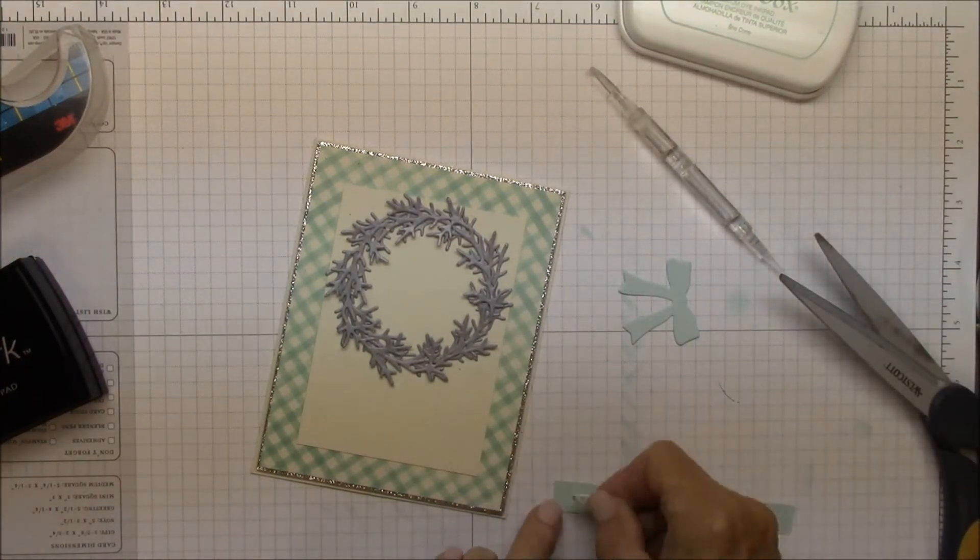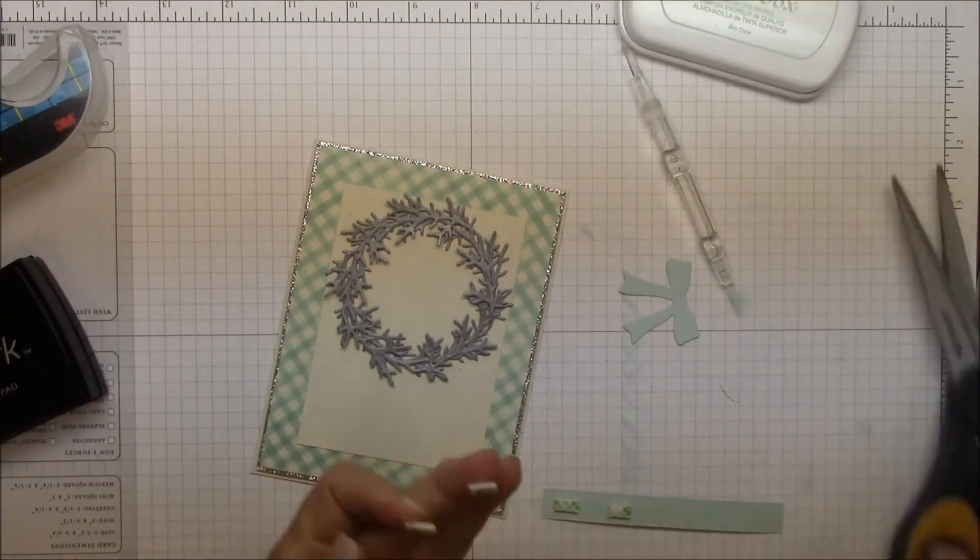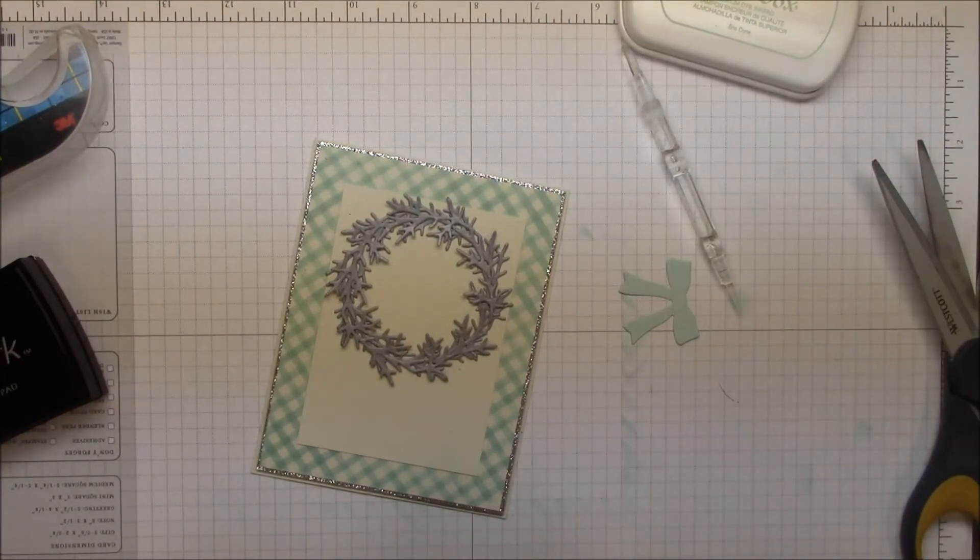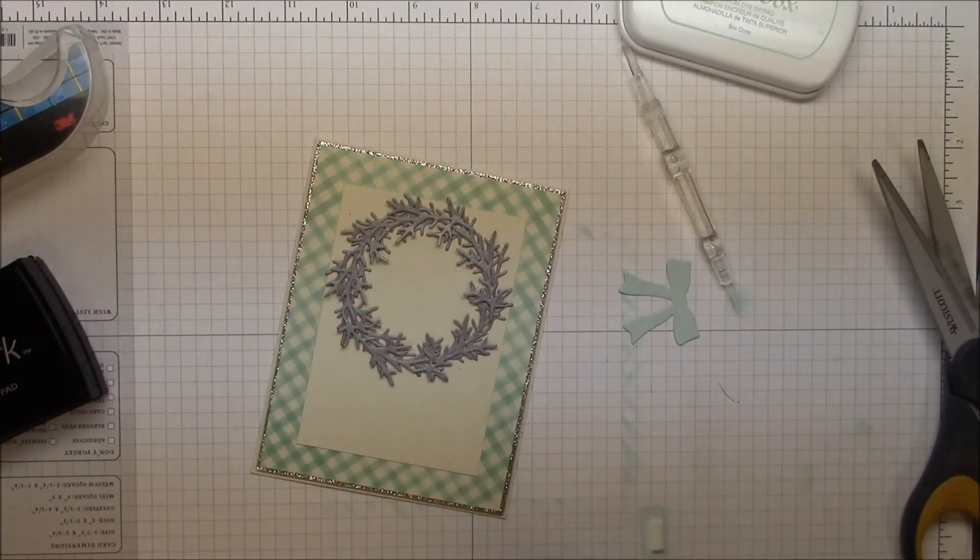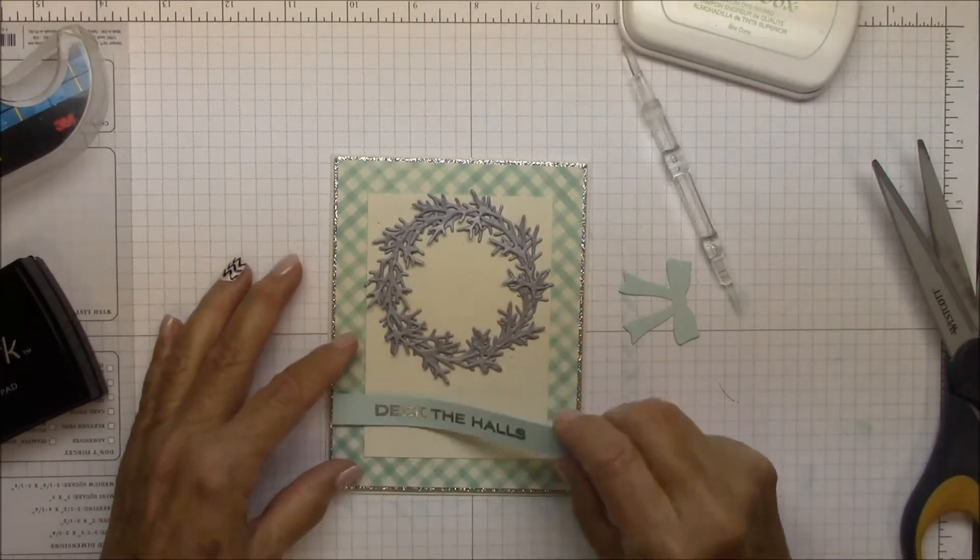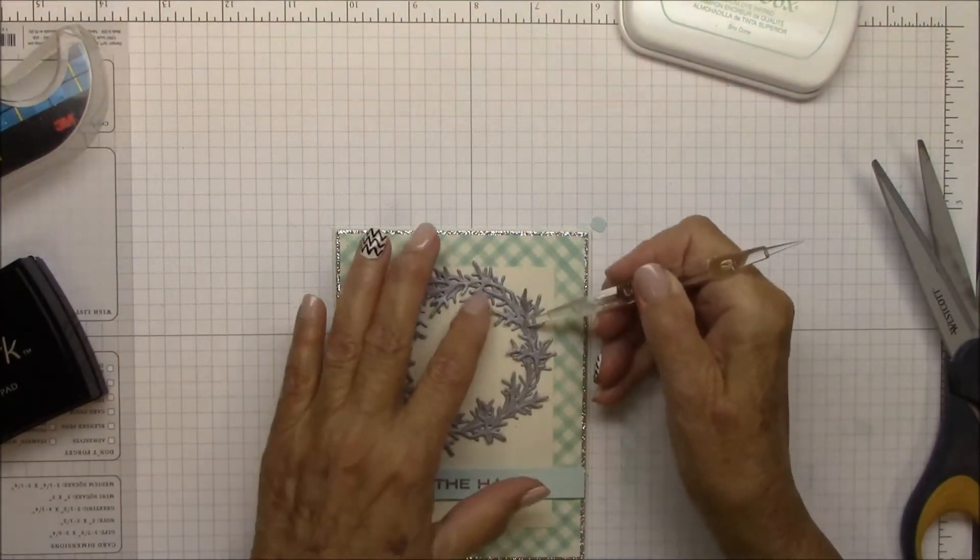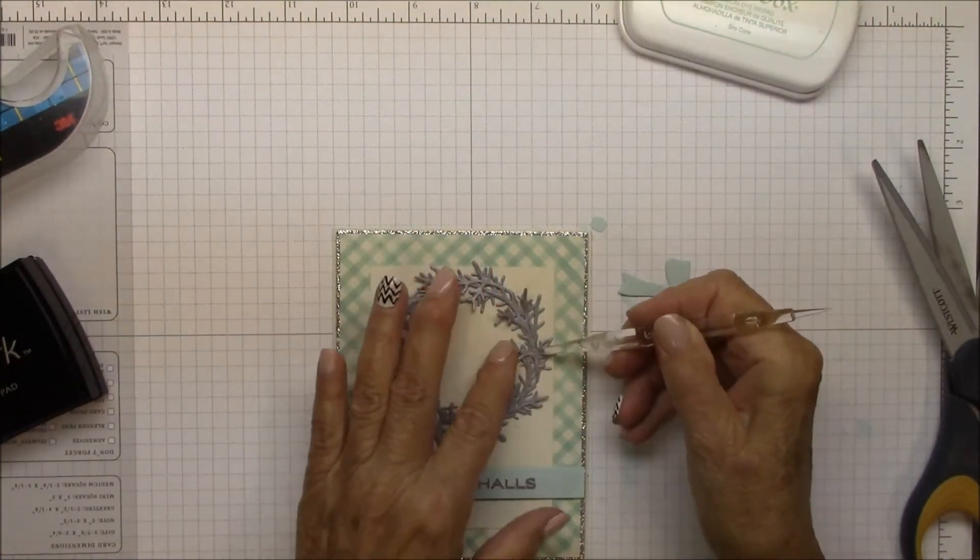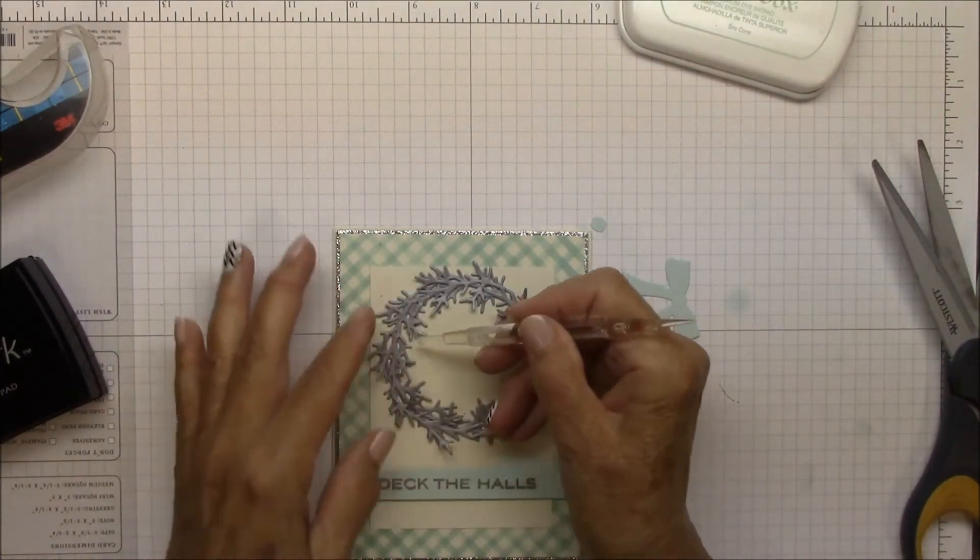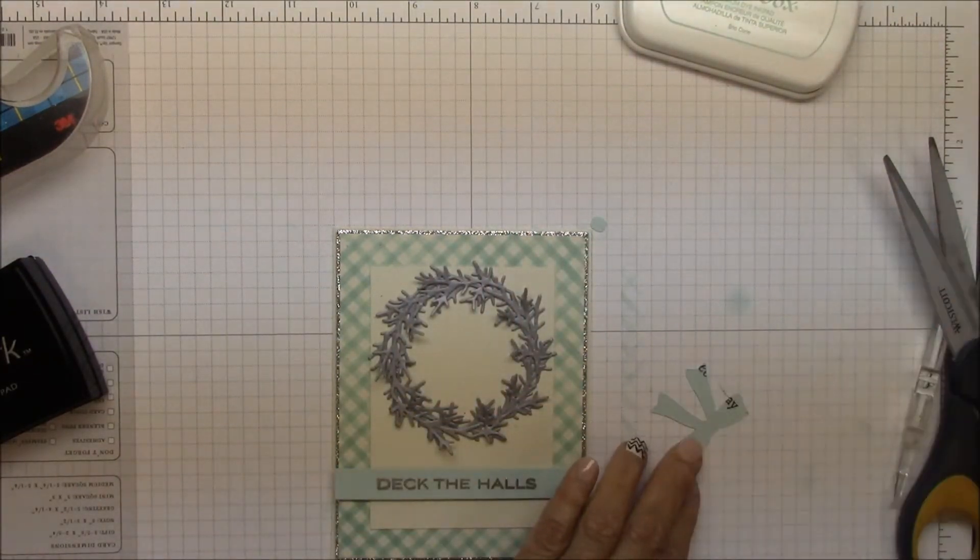And then I'm going to adhere the sentiment strip to the card popped up on some little bits of foam tape. I find the grid sheet just invaluable for lining up everything. And then next I'm going to fluff up my branches a little bit, because they got kind of mashed down when I turned it over.